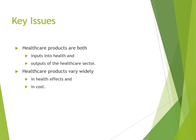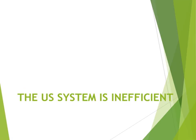Some key issues we'll be looking at in chapter two are: healthcare products are both inputs and outputs — inputs into health and outputs of the healthcare sector. Healthcare products vary widely in health effects, and the U.S. health system is inefficient. Let's look at some numbers to see if we can definitively say this, or if it's just a trend with no data to back up its relevance.